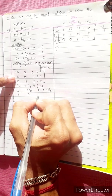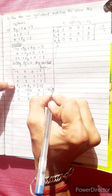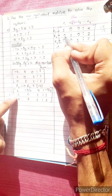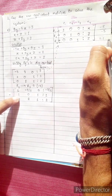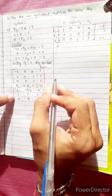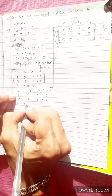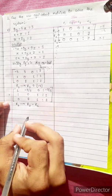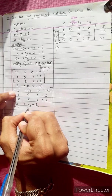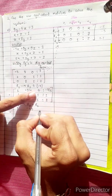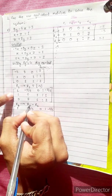So R1 becomes: 1, minus 9 by 5, 0, minus 3 by 5. The second row remains: 1, 0, 1, 2. The third row is: 0, 2, 1, 2. Now we change R2 into R2 minus R1.